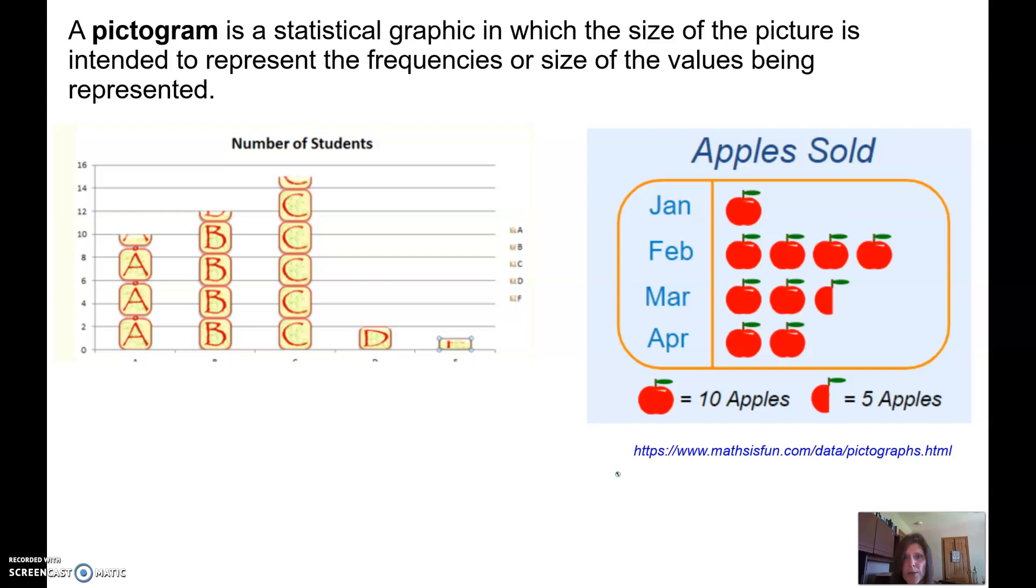So in January there's one apple, frequency is ten. In February there are four apples so the frequency is 40. In March two and a half so that would be 25 apples and so on. So a pictogram doesn't necessarily have to have a frequency axis, the frequency can be wrapped up in the image itself. You have to be given a key if that is the case but it kind of makes it a little bit more fun.